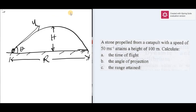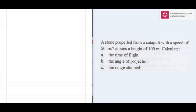In the question, the initial velocity u is given as 50 meters per second. The maximum height H is 100 meters. Acceleration due to gravity g is 10 meters per second squared.